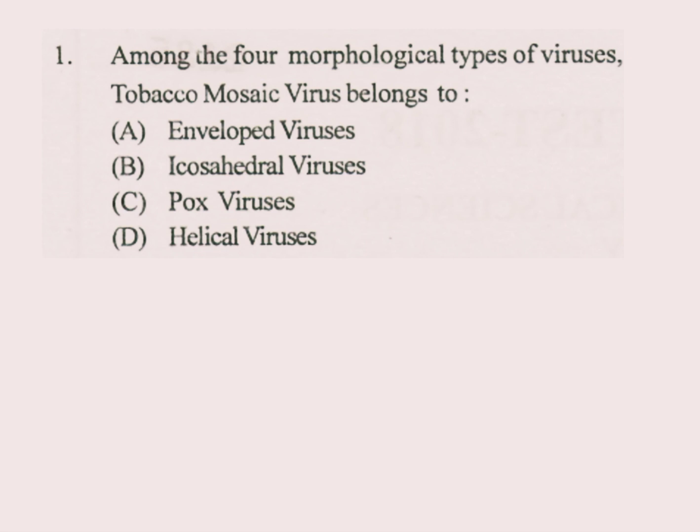Question number 1. Among the 4 morphological types of viruses, Tobacco Mosaic Virus belongs to. Answer is D part: Helical Virus.